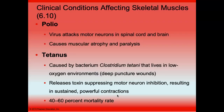Other conditions can affect our muscles. Polio was catastrophic for many children in the 1950s. It's a virus that attacks the motor neurons, causing muscle atrophy and paralysis — so it's a problem with the neural signal.